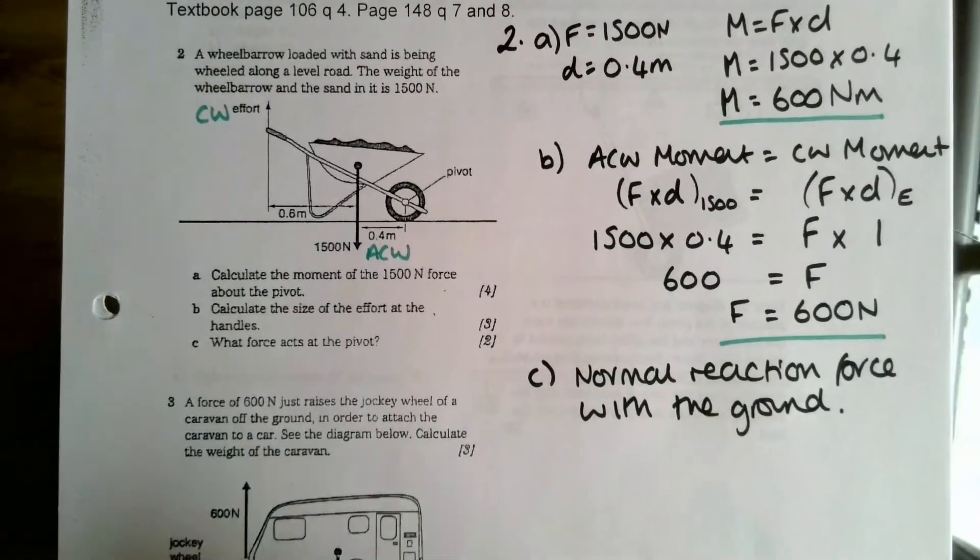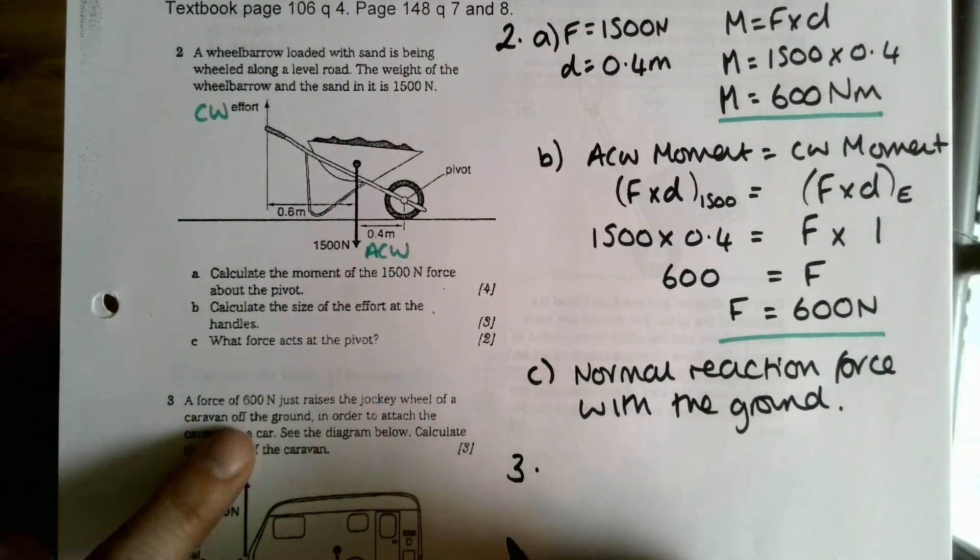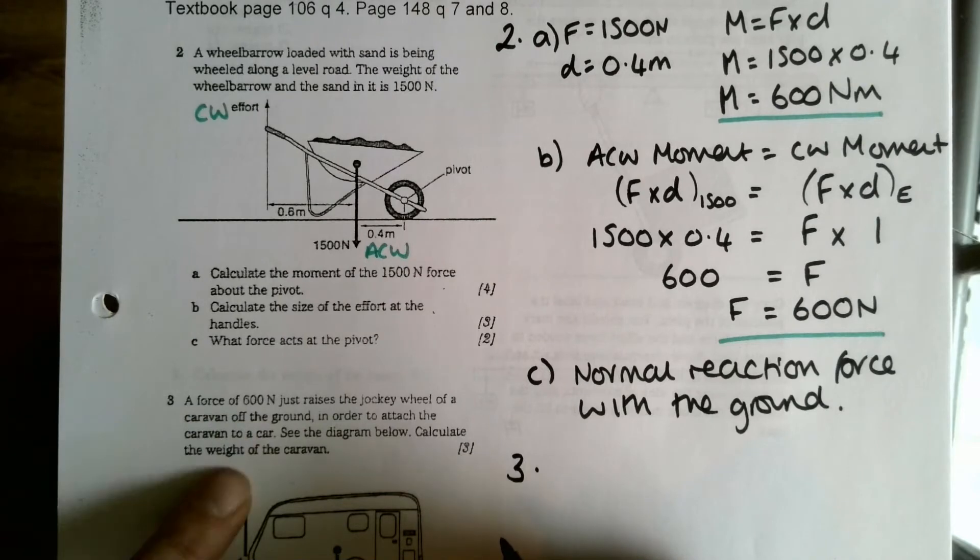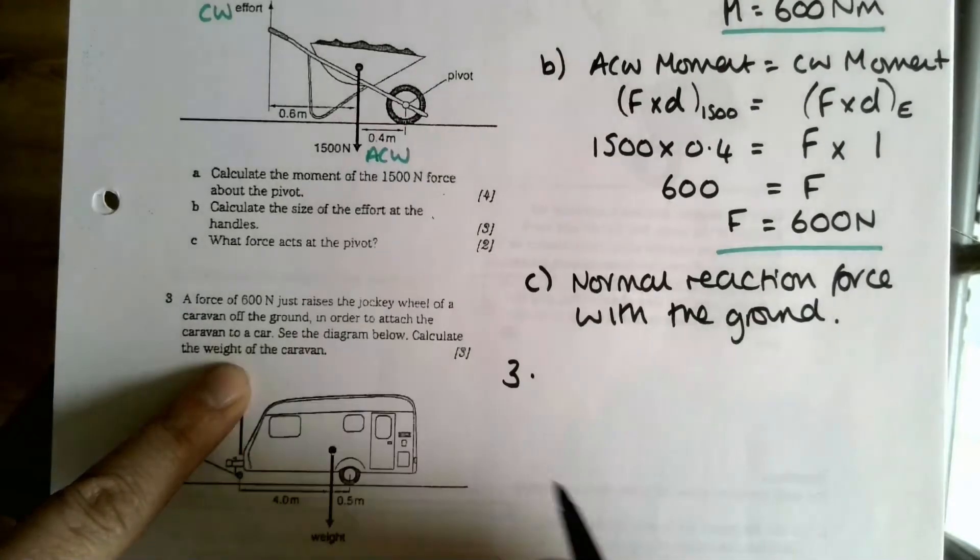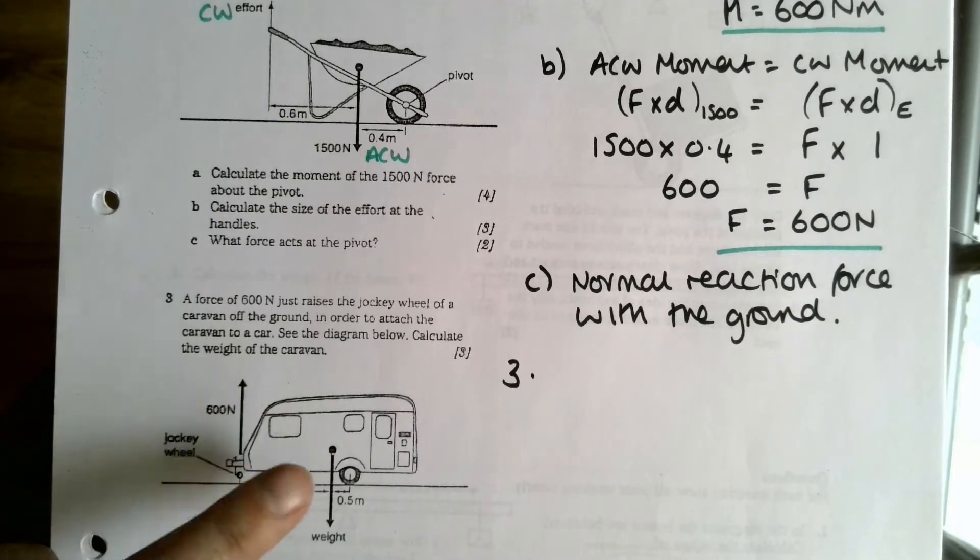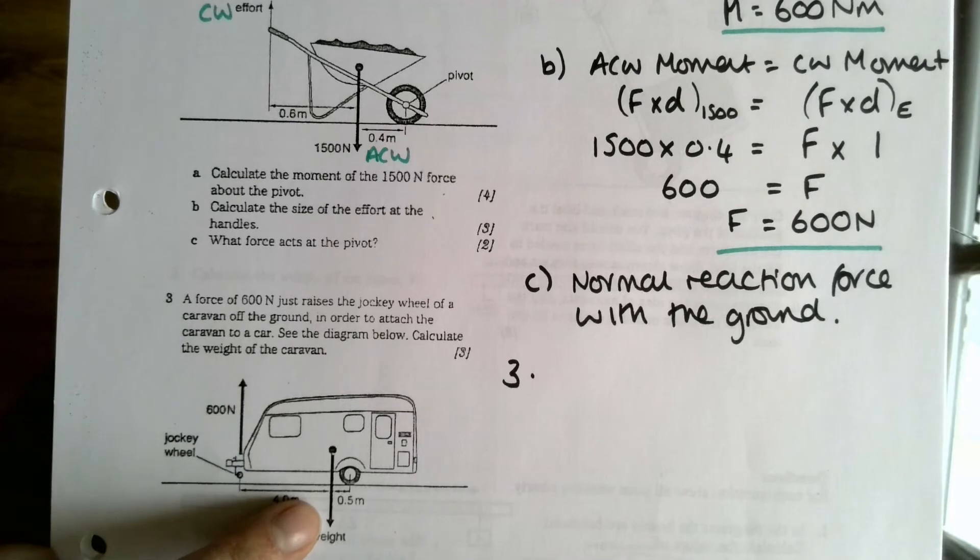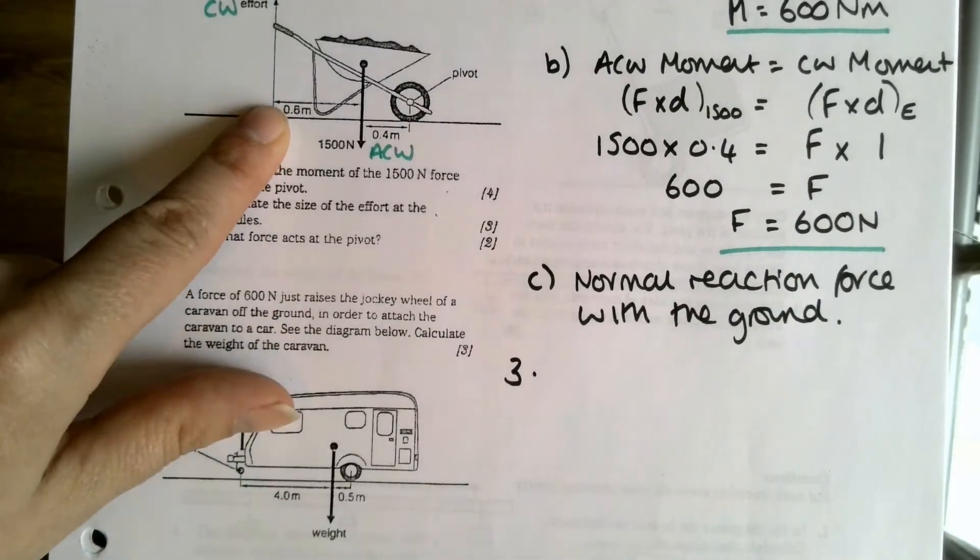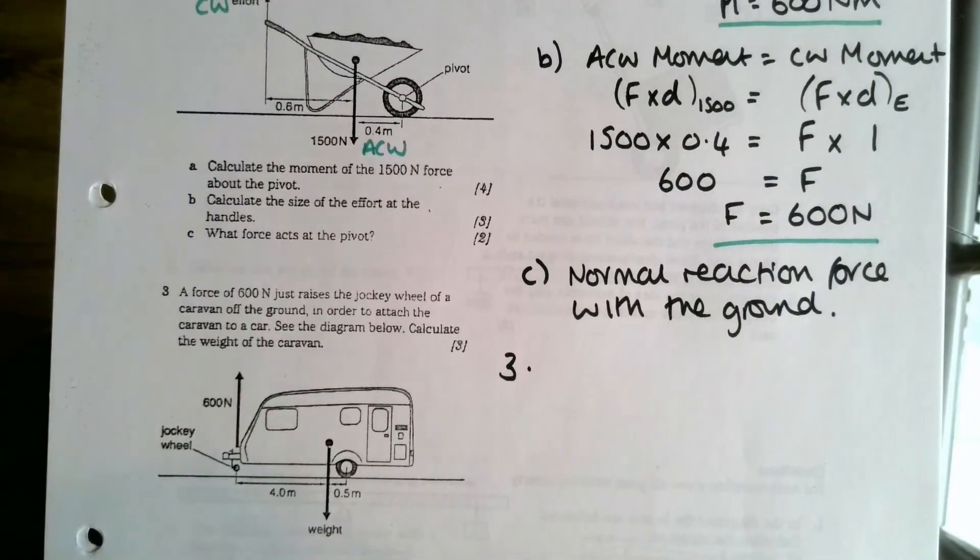Okay, number three: a force of 600 newtons just raises the jockey wheel of a caravan off the ground in order to attach the caravan to a car. See the diagram below and calculate the weight of the caravan.